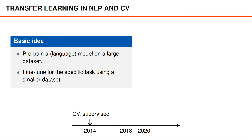Transfer learning became the default strategy in computer vision around 2014. People often used models that were pre-trained for image classification on ImageNet, which meant that they used supervised learning and a large annotated dataset to pre-train the model. For several years after that, people were unsuccessfully investigating ways to use transfer learning in natural language processing, and they were trying to come up with tasks and datasets with the same appealing properties as ImageNet had for computer vision.